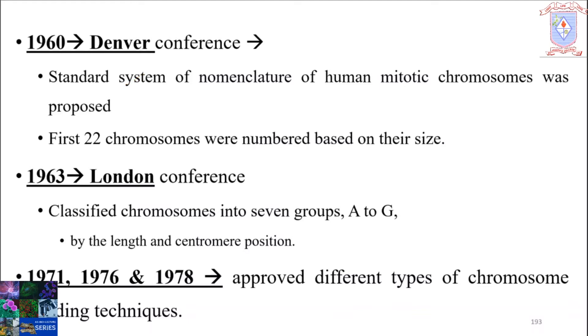A standard system of nomenclature for human mitotic chromosomes was proposed, and the first 22 chromosomes were numbered based on their size in the ISCN conference held in Denver in 1960. Then, the conference held in London in 1963 classified the chromosomes into seven groups, A to G, by length and centromere position.